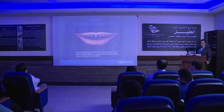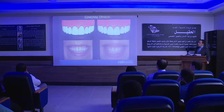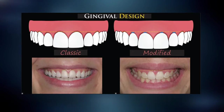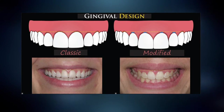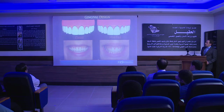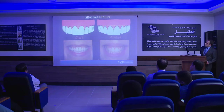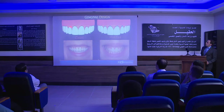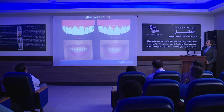Once we do it for the central, we do it for the lateral and the canine. There are two ways: the classic way, where the gingival margin of the lateral should be a little lower than the margin of the central incisor — about half to one millimeter — and the canine should be equal to the central. Or the modified way, where the central and lateral are almost equal and the canine is a little higher.